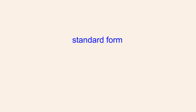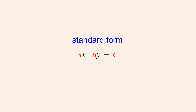The standard form for the equation of a line in the xy-plane is usually written as ax plus by equals c. Individually, the constants a, b, and c have no special meaning. However, in combination, these constants can tell us a number of things about a line's graph.